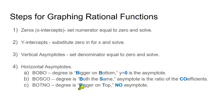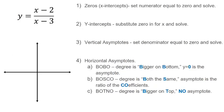And then BOTNO means if the degree is bigger on top, there's no asymptote. There can also be slant asymptotes or oblique asymptotes. We're just not going into that just yet. So here, I'm just going to take this. I've got the same steps from the previous slides. If you didn't copy them down, you can copy those down. But let's just go through these one by one.